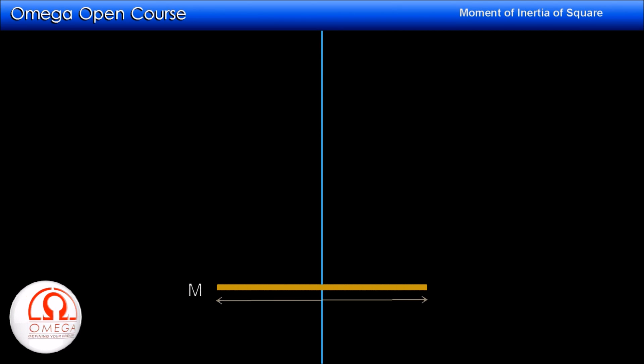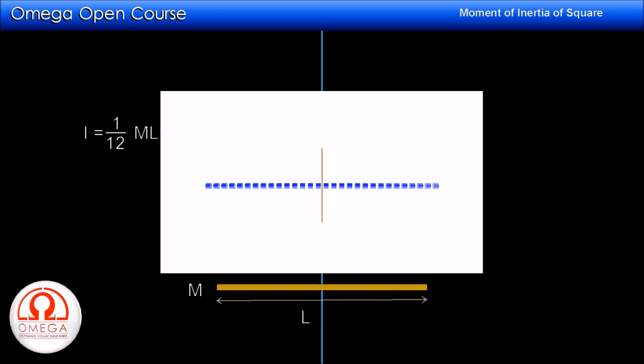Let us take a rod of mass M and length L. The moment of inertia of this rod about an axis perpendicular to the rod and passing through its midpoint is 1/12 ML². If you do not know how to arrive at this result, you should watch our video on moment of inertia of rod. The link is shown on the screen and given in the description below.